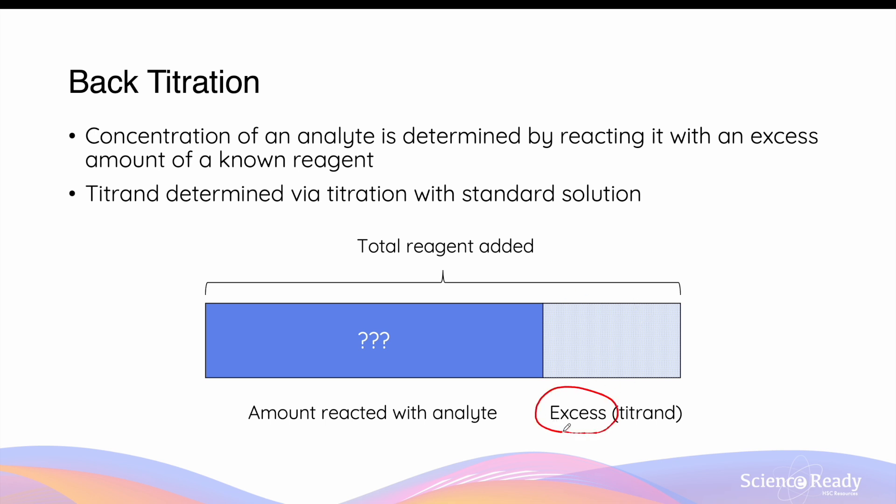The excess amount of this reagent that we are adding is referred to as the titrant of back titration. In back titration, the titrant is further reacted with a standard solution via titration, where during this titration, we are trying to use the techniques of proper titration to determine the quantity of the titrant.